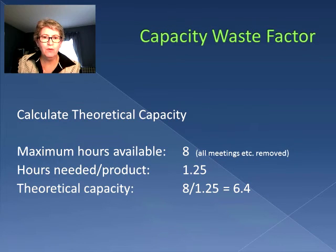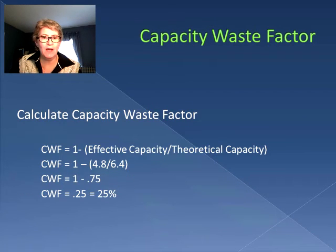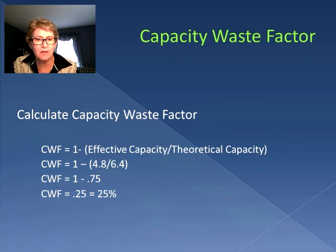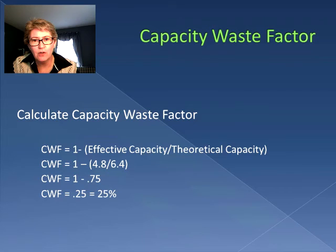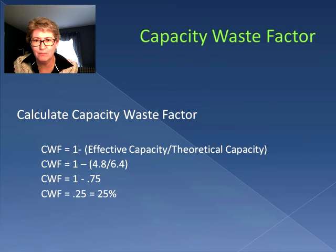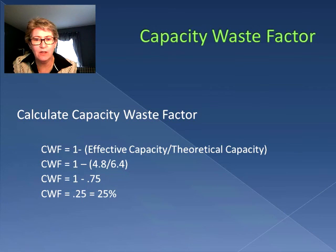Now we have both the theoretical capacity and the effective capacity, so we can calculate the capacity waste factor. CWF is equal to one minus the effective capacity divided by the theoretical capacity, which gives us one minus 0.75, which is 25%. So we have a waste factor of 25%. If we're trying to improve our situation, we're going to try and get our effective capacity closer to our theoretical capacity. This is how you calculate capacity waste factor, and I hope to see you again for another session.